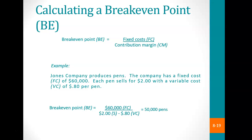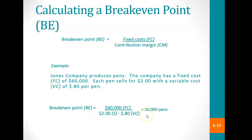Let's verify: if we sell 50,000 pins at $2 per pin, that gives $100,000 in total sales. Variable cost is $0.80 per pin, so $0.80 times 50,000 equals $40,000. Fixed cost is $60,000. Therefore, total cost — $40,000 plus $60,000 — equals $100,000, the same as total sales. We have broken even.